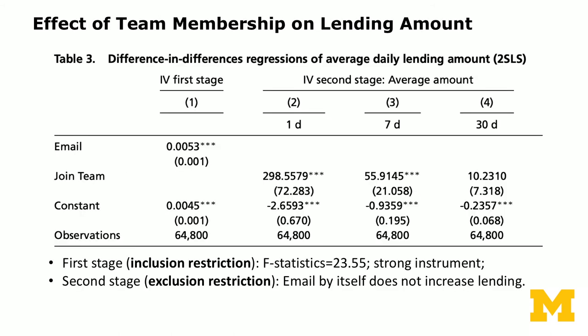This is our two-stage least-squares IV regression — the main application of our IV approach. We use both difference-in-differences and IV. The main question is: do people who join teams lend more? We want to estimate the effect of team membership on lending amount. The diff-in-diff is created by looking at a window after intervention versus a comparable window before the intervention. We examine three specifications: a one-day window (column 2), a seven-day window (column 3), and a thirty-day window (column 4).